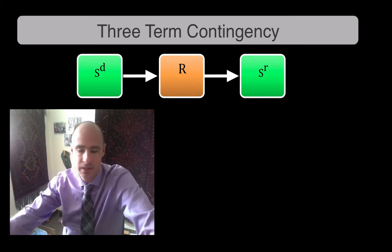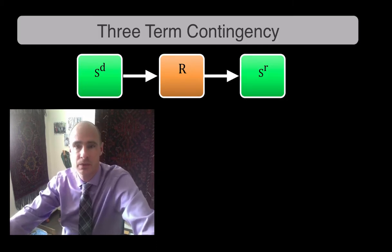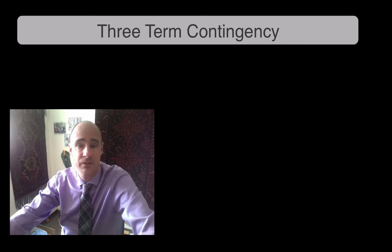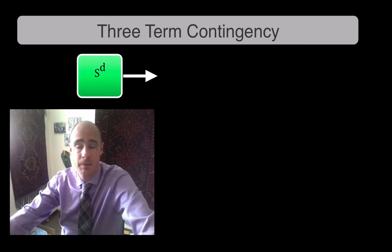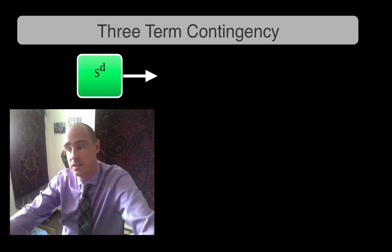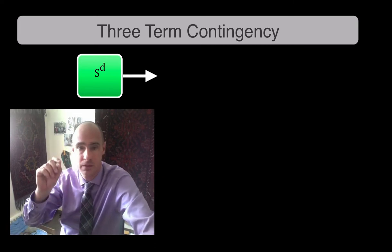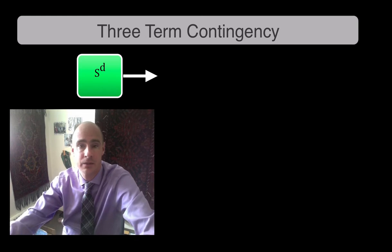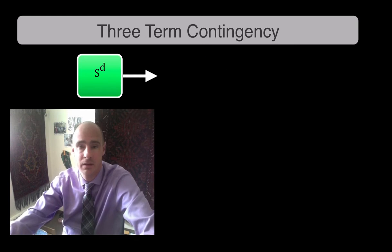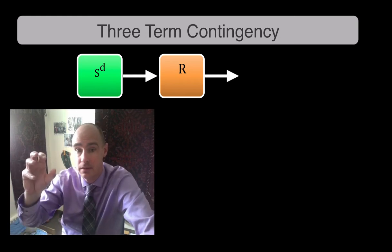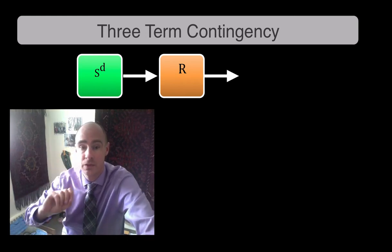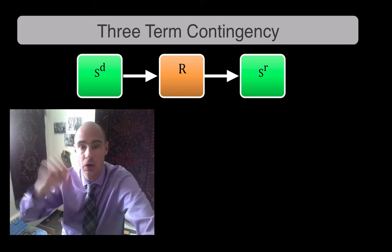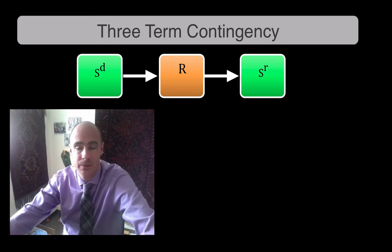We have the three-term contingency. That's the basic pieces, right? So the notation we use for that is simple. An SD is the first term. That stands for a discriminative stimulus, or a stimulus that discriminates, however you want to look at it. So it's written with a superscript, so S with a D up in the superscript. Then the second term in the three-term contingency is an R, or a response. The third term is the S, and it's something else. There's a lot of those something else's, so we'll start with the first one, the easiest one, which is SR.